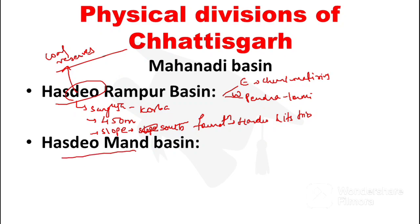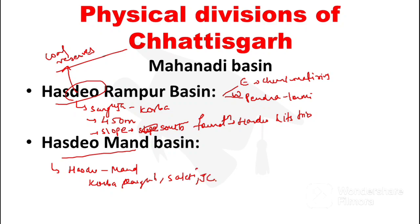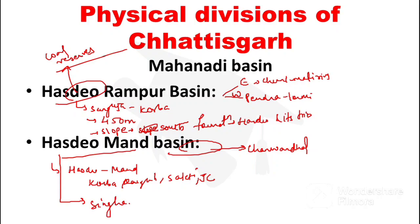Next is Hasdi-Marn Basin, which is the area between the Hasdev and Mand rivers. The expansion covers Korba, Raigarh, Sakti, and parts of Janjgir-Champa. This area is also known by the name Chawer Dhal. Singhanpur cave, which is famous for ancient rock paintings, is located in this region. Evidence of the Stone Age has been found here, making it historically significant.